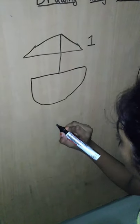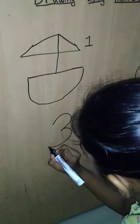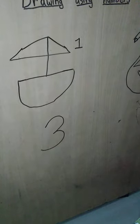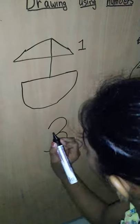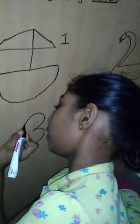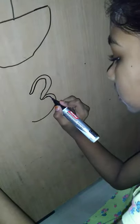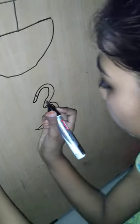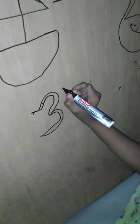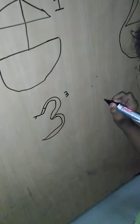Now by using the number three, we are going to draw something. Draw a line like this, then draw a dot and continue the line. Can you guess what it is? Yes, by using the number three we drew a snake!